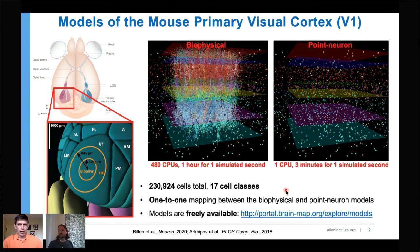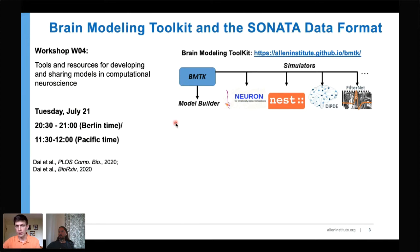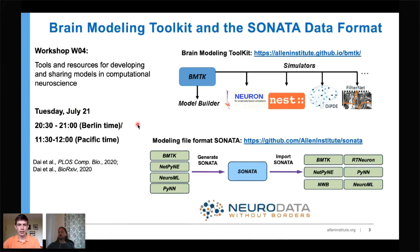We've built tools for this work, which we'll present in a workshop on Tuesday — the workshop on tools and resources for developing and sharing models in computational neuroscience. These tools include the Brain Modeling Toolkit, software for running simulations that interfaces with established tools like NEURON and NEST, and the SONATA file format developed together with the Blue Brain project to represent and share models efficiently with the community.